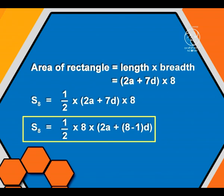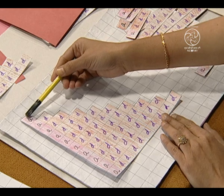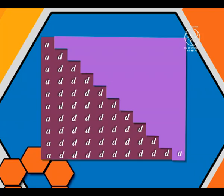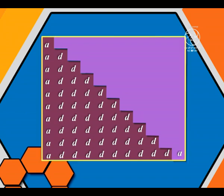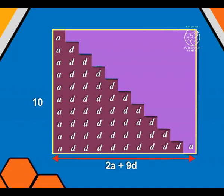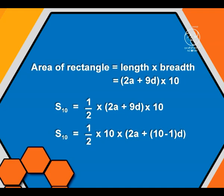Note down this observation. Now we will be taking the sum of first 10 terms. As you can see, this piece is representing the sum of first 10 terms — I have arranged here A, A plus D, up to A plus 9D, and this piece is the replica. Arrange it in this manner and you get a rectangle where the length is 2A plus 9D and the breadth is 10 units. So S10 will be half of the area of this rectangle, that is half of (2A plus 9D) into 10, which is equal to half of 10 into (2A plus (10 minus 1) into D).